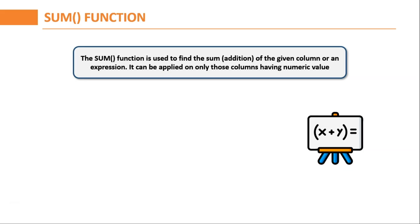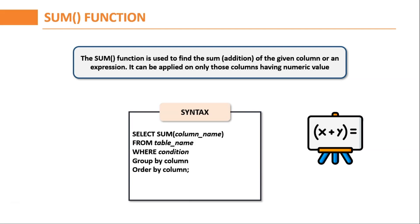Next, let us discuss about the SUM function in SQL. The SUM function returns the total summation of the value of a specified column. SUM performs only on numeric columns and does not consider null values. It has optional arguments like ALL and DISTINCT. The ALL keyword takes all values in the specified column, while the DISTINCT keyword removes all duplicate or redundant values. The syntax is: SELECT SUM(column_name) FROM table_name WHERE condition GROUP BY column ORDER BY column.